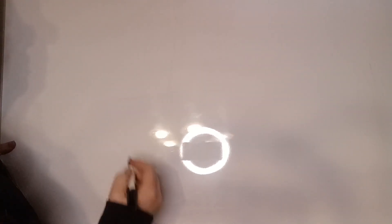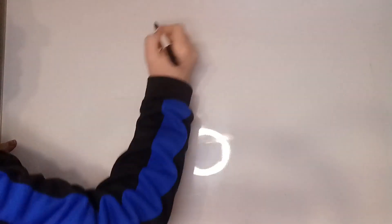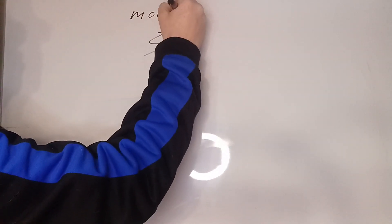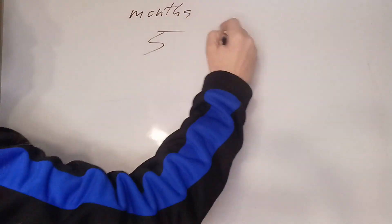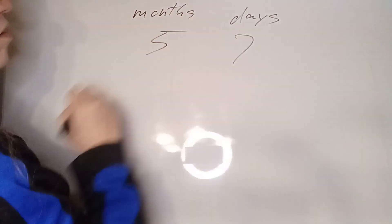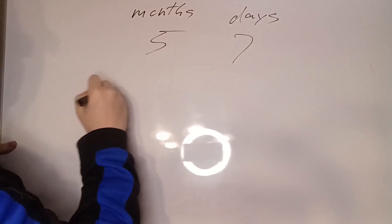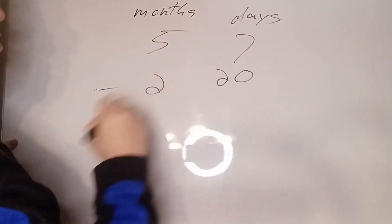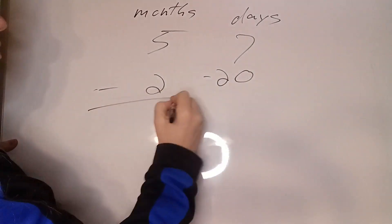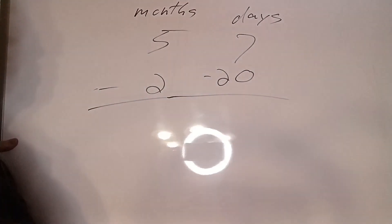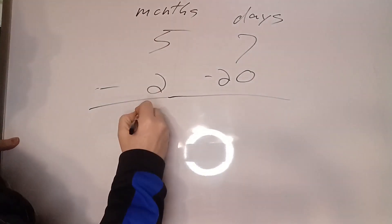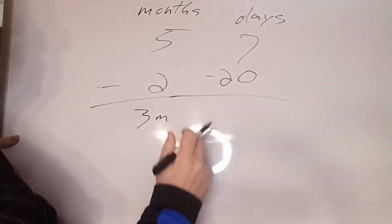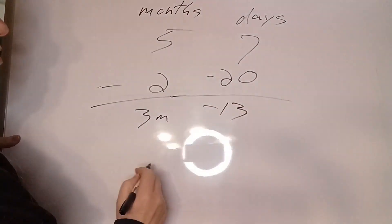Let's subtract five months, seven days, minus two months, 20 days. Five minus two is three months. Seven minus 20 is minus 13 days.